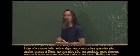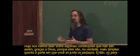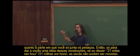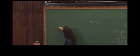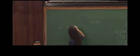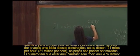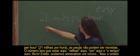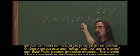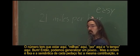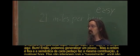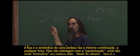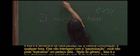Today we're going to talk about some constructions that aren't like that, because they're actually simpler — they're just put together from pieces. To give you an idea: if I say '21 miles per hour,' the pieces are not movable. The number has to go here, miles here, 'per' here, and the time unit here. The order is fixed, and the semantics of each piece makes the same contribution every time. It doesn't interact with passivization, you can't topicalize one piece of this. So this is what we call a real construction.